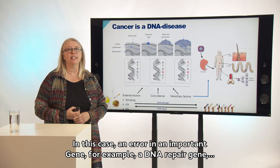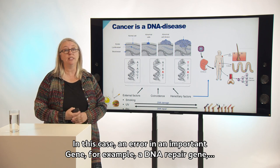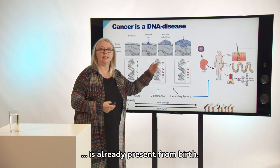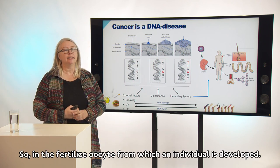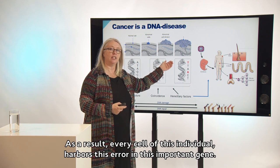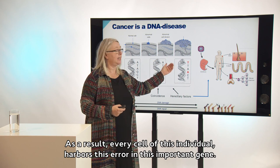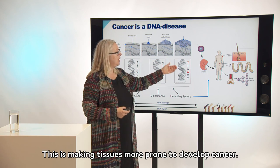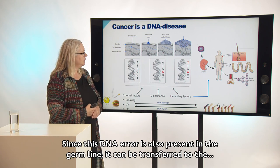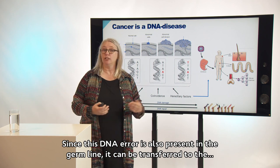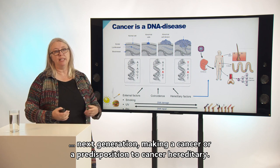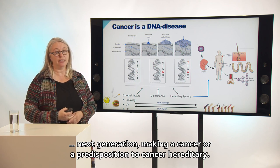In this case, an error in an important gene — for example a DNA repair gene — is already present from birth, in the fertilized oocyte from which an individual is developed. As a result, every cell of this individual harbors this error in this important gene, making tissues more prone to develop cancer. And since this DNA error is also present in the germline, it can be transferred to the next generation, making a cancer predisposition hereditary.